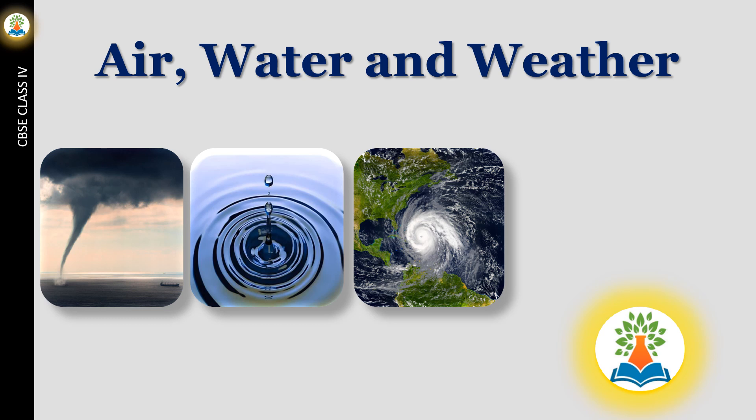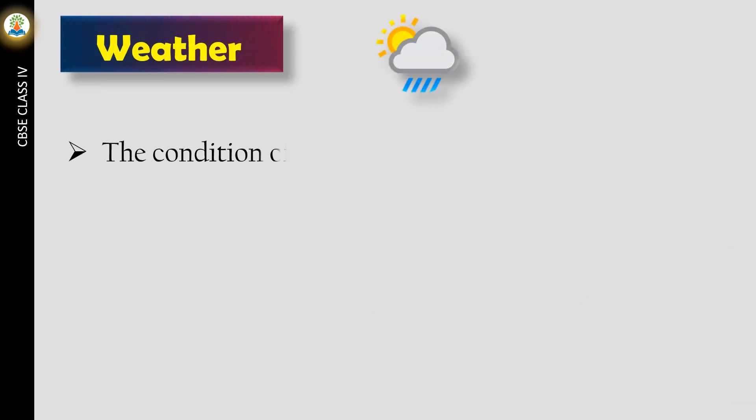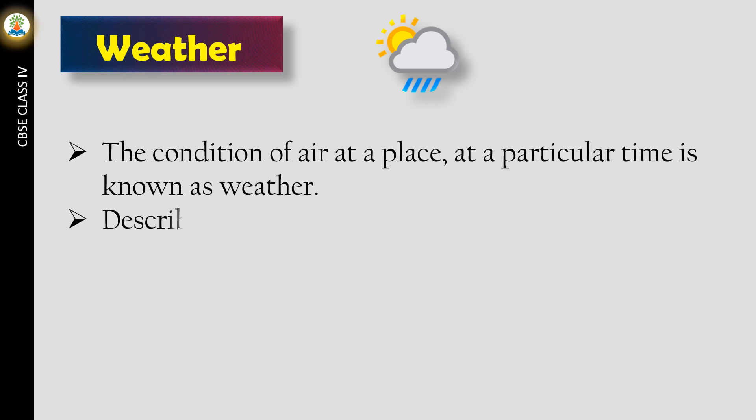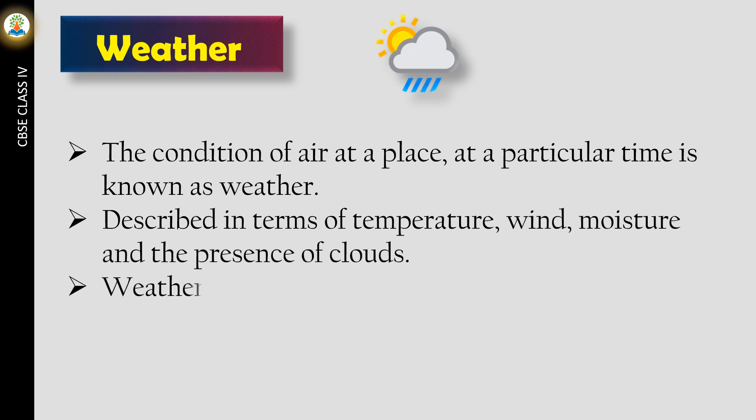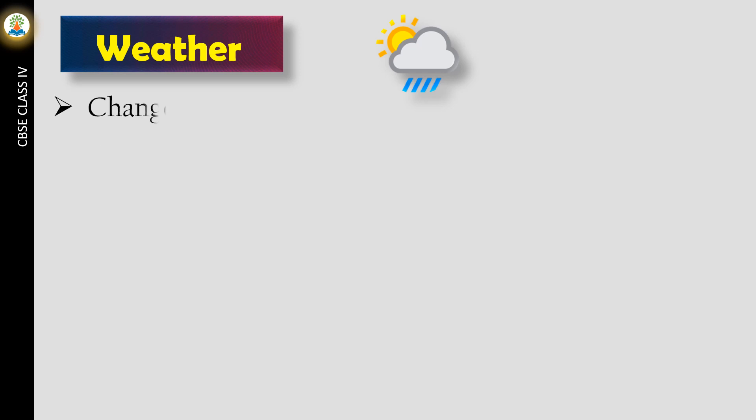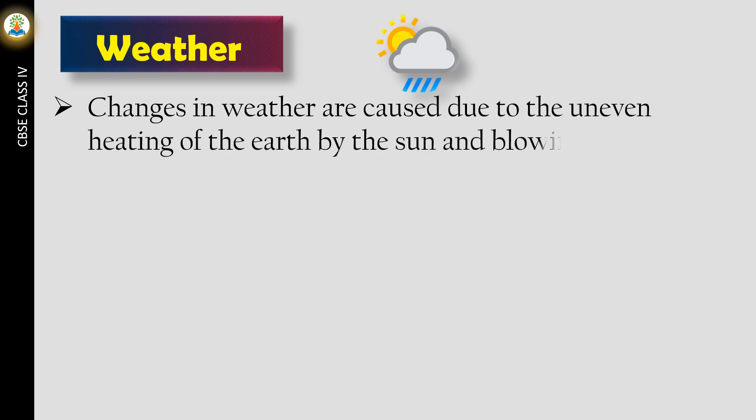Hello friends, in this video we will learn about air, water, and weather. The condition of air at a place at a particular time is known as weather, described in terms of temperature, wind, moisture, and the presence of clouds. Weather is a short-term condition of the surrounding. Changes in weather are caused due to the uneven heating of the earth by the sun and blowing of winds in different directions and evaporation of water bodies.